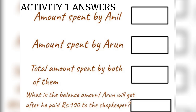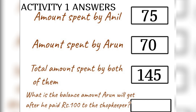Activity 1 Answers. Amount spent by Anil: 40 plus 35 is equal to 75. Amount spent by Arun: 50 plus 20 is equal to 70. Total amount spent by both of them: 75 plus 70 is equal to 145.